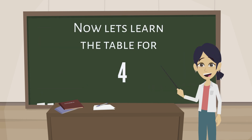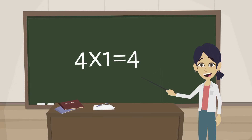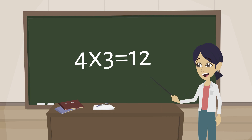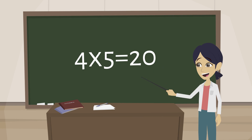Now let's learn the table for 4. 4 1s are 4, 4 2s are 8, 4 3s are 12, 4 4s are 16, 4 5s are 20,